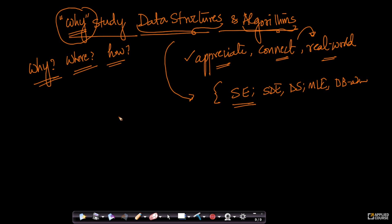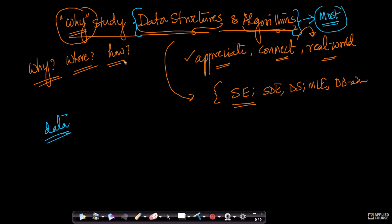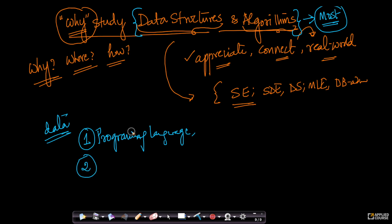Let me take you on a tangential tour and give you some data and arguments to convince you that data structures and algorithms is probably the most important subject in computer science. If I had to pick three most important things in computer science, I would pick knowledge of a programming language first — knowledge of programming in general — because without some knowledge of programming, you can't even work with a computer.